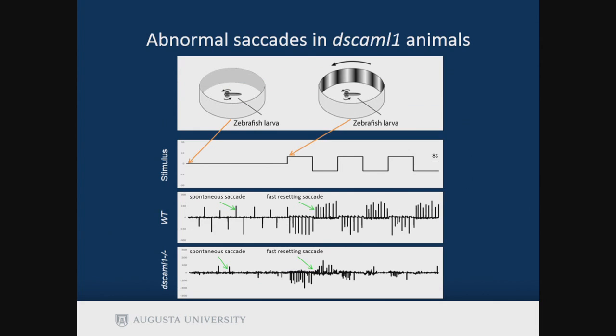While there is no stimulus on the screen, in the wild types we see spontaneous and relatively regular spikes. But in the mutant fish, there are random spikes or weaker spikes. During the stimulus, wild types show fast-resetting that is also regular. But in DSCAM-L1 mutants, the resettings vary — some big, some small — and towards the end there seems to be a fatigue in the resettings.